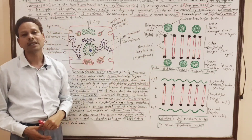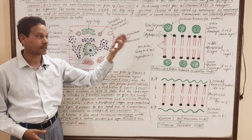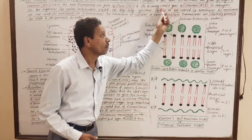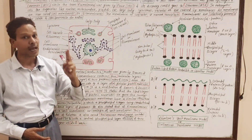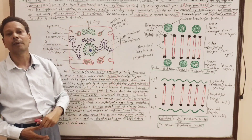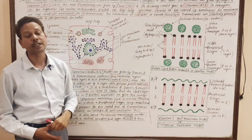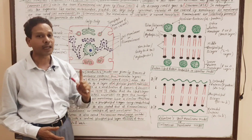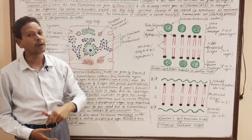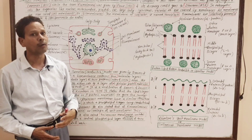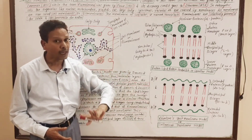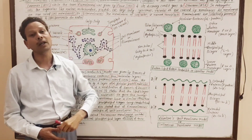In today's lecture, we are discussing cell membrane and its models. The discovery credit for cell membrane goes to Cheyvan in 1838. The term 'cell membrane' was coined by Nagli and Kramer in 1855.